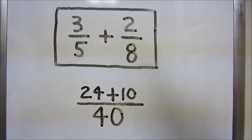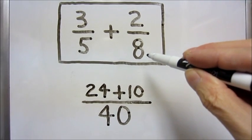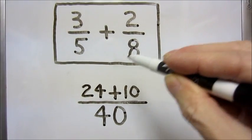Next, we start with the top left numerator, multiply it by the denominator of the other fraction, 3 times 8 to get 24.